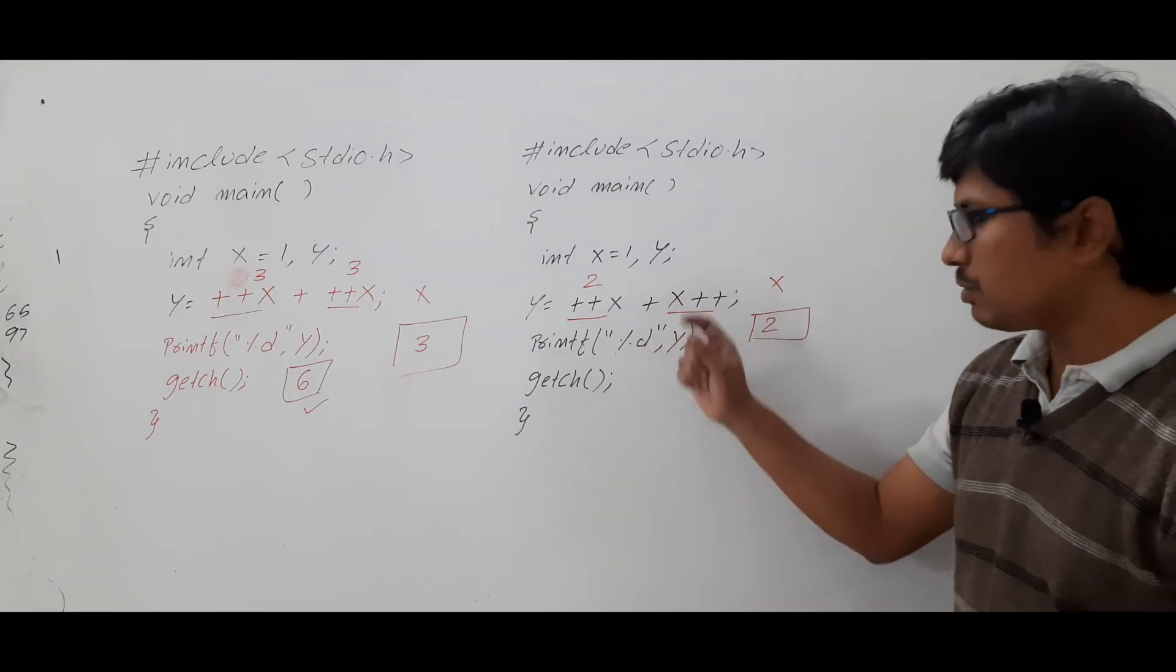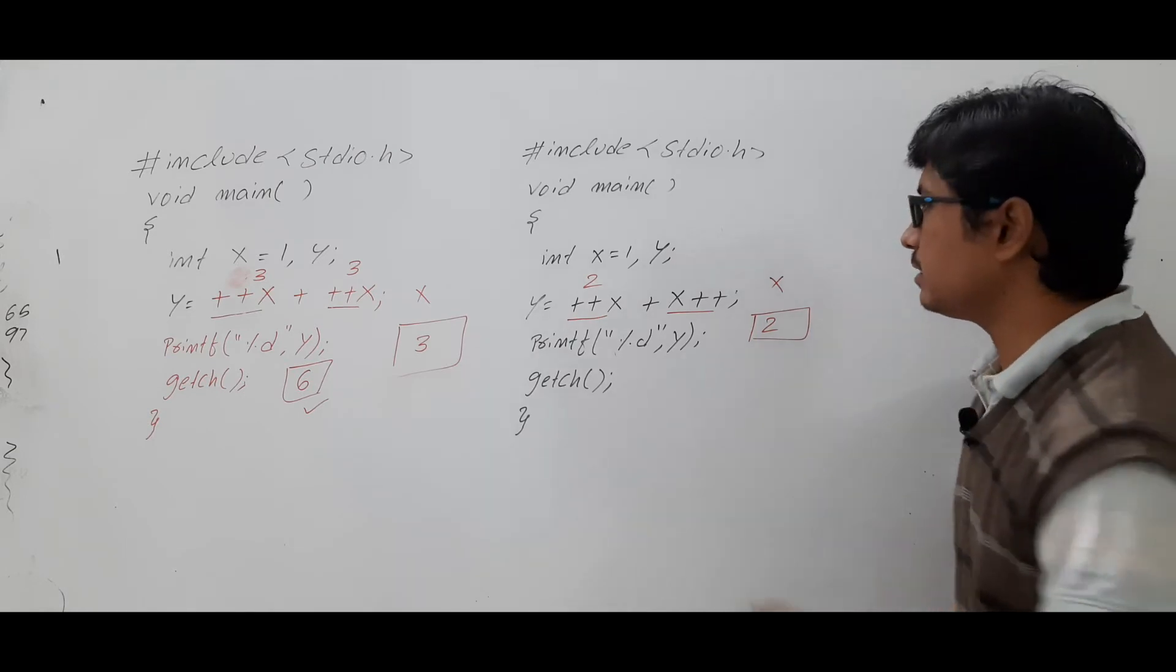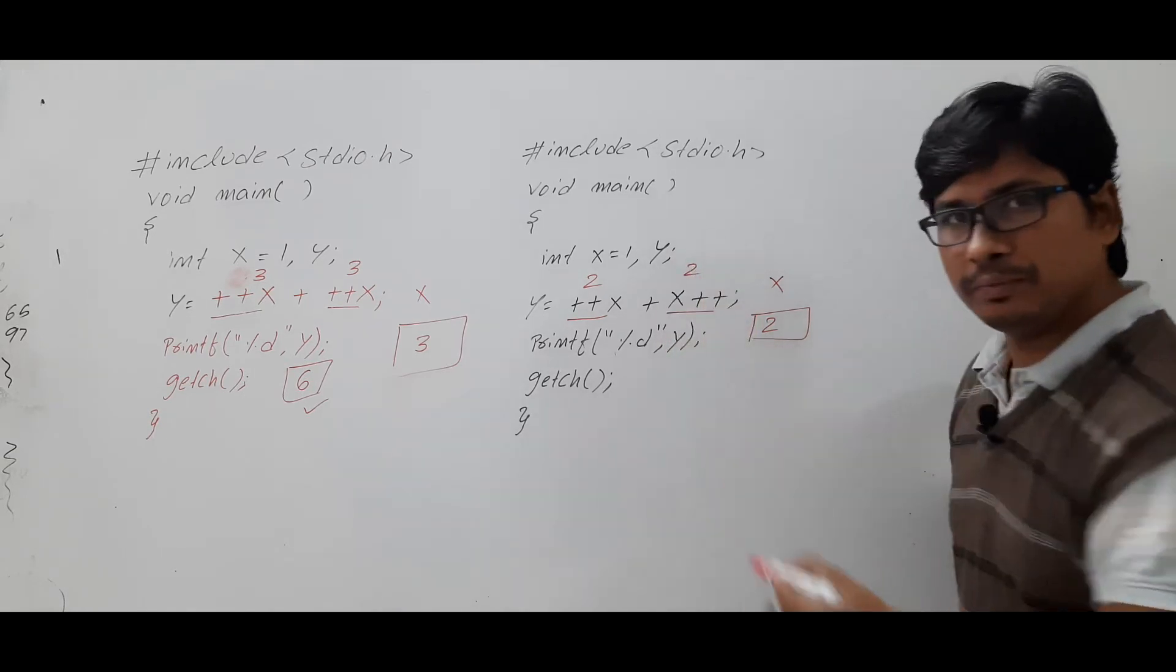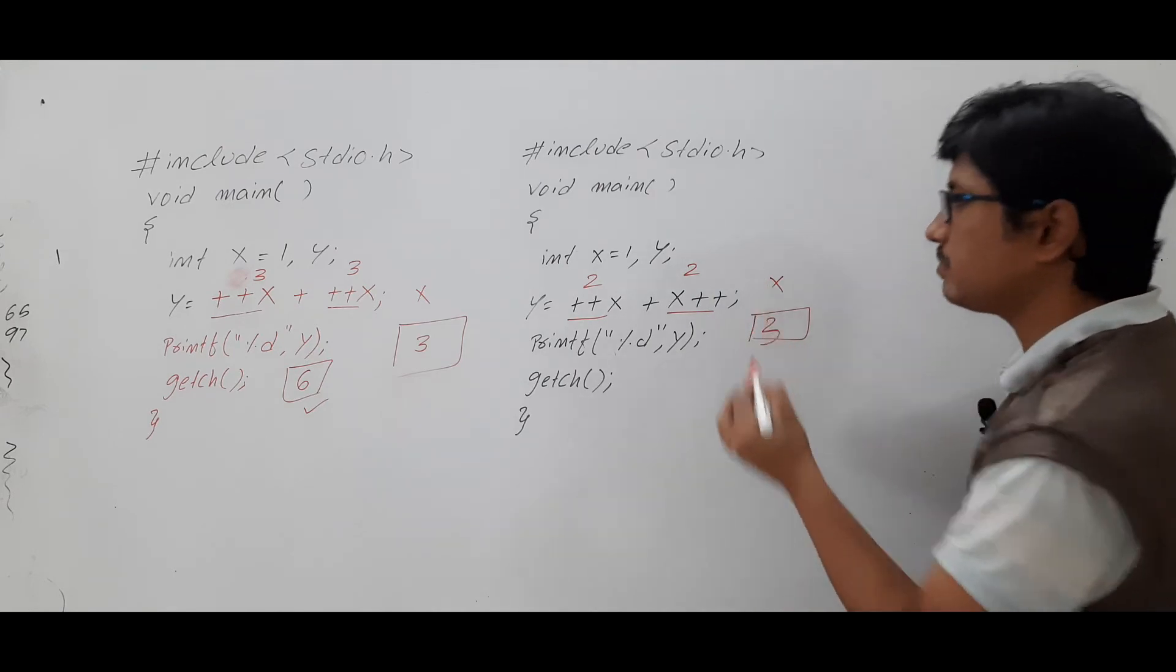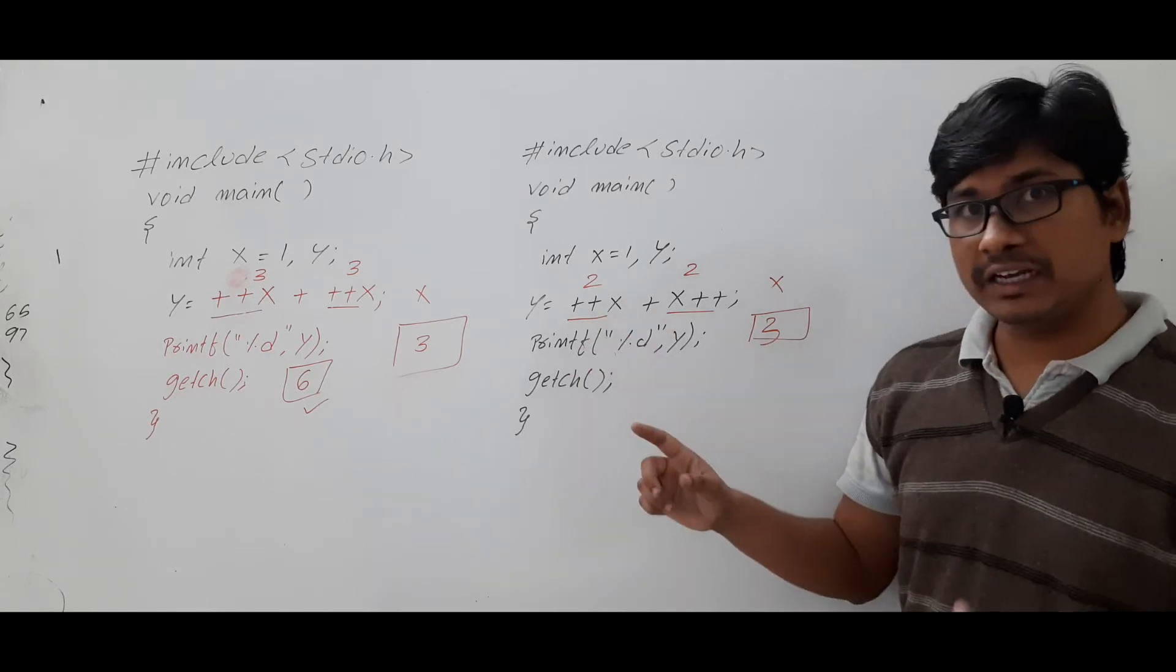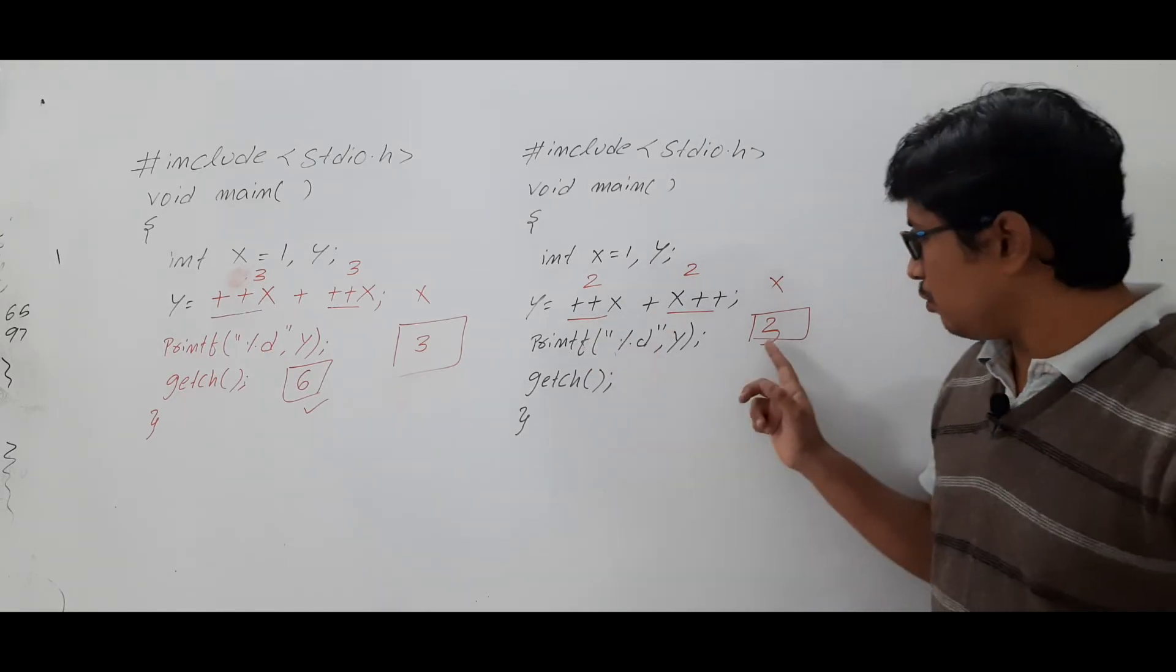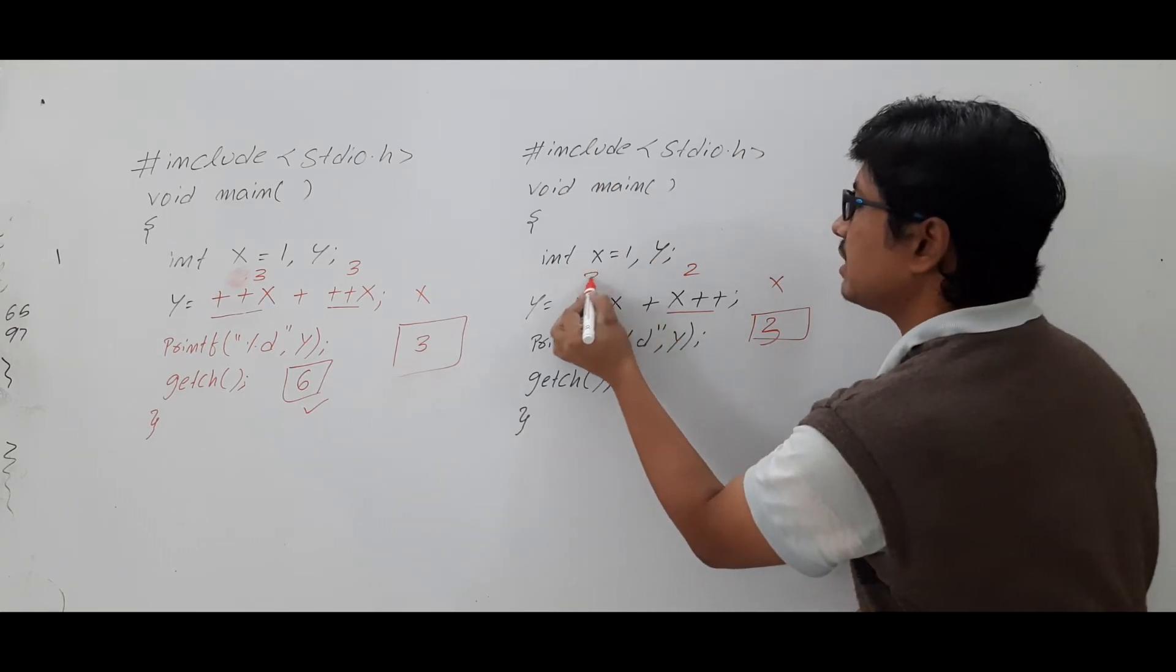Now come to the post-increment. What is the post-increment? First it will assign. Then perform the increment. So it will be 2. And then it will perform the increment. Then x value will become 3. What is the pre-increment doing? First it is incrementing. Then it will assign. Now what is the x value? x value is 3. So here you will get the value 3.